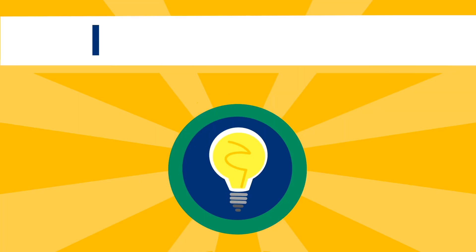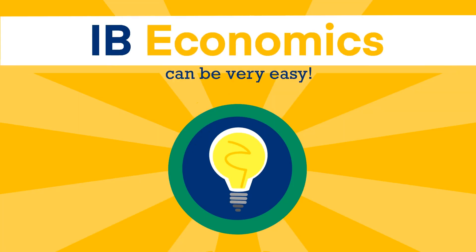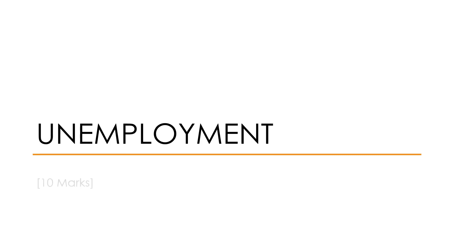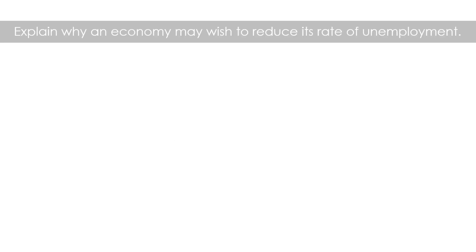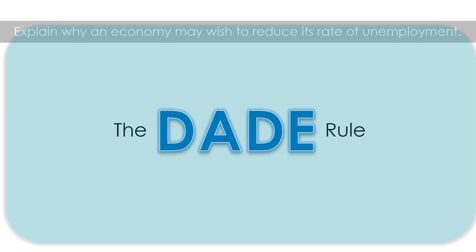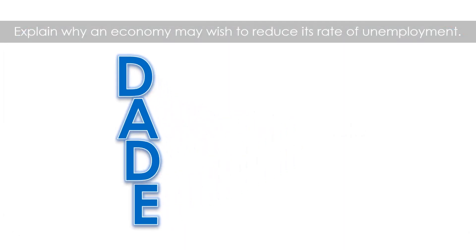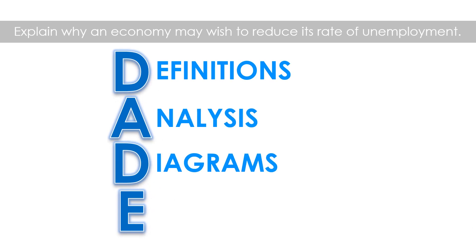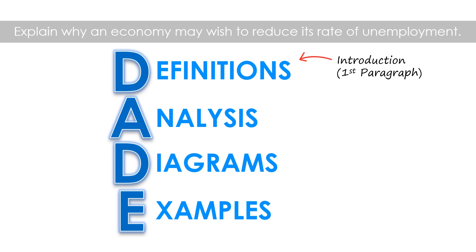High Band economics essay writing can be made very easy. The essay title is: explain why an economy may wish to reduce its rate of unemployment. Before we go into the details, let's go through the DADDY rule, which applies to all 10-mark essays. We need definitions, analysis, diagrams, and examples. We usually include the definitions in the introduction and the rest in the body paragraphs.